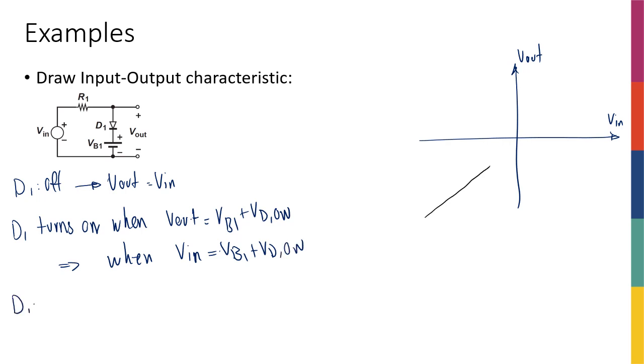So now after D1 is turned on, I can say that it becomes a voltage source, so vout is going to be just basically a series combination of two voltage sources. So vout is going to be just vb1 plus vd on. So my plot is going to look like this. So let's say this is your vb1 plus vd on. And after that, we have a flat line. So this is the border. Here, the diode is on. Here, the diode is off. So I hope this was clear. Let's move on to the next example.